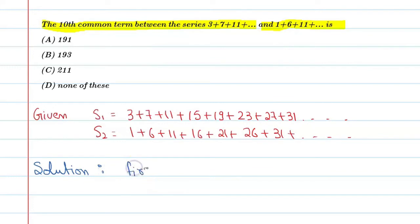So we can say that the first term, small a, is equal to 11. And common difference, that is small d, is equal to 31 minus 11, is equal to 20.